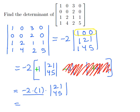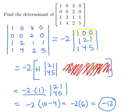So let's see, these two together are negative 2, and this determinant would be 10 minus 4. So we're going to have negative 2 times 6, for a grand total of negative 12. The determinant of this 4 by 4 matrix is negative 12.